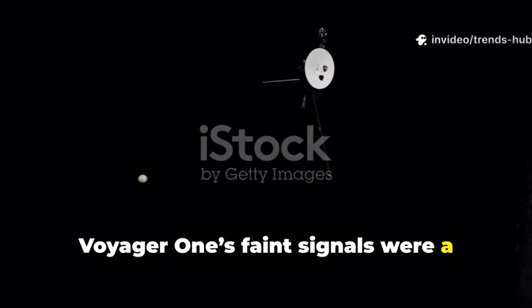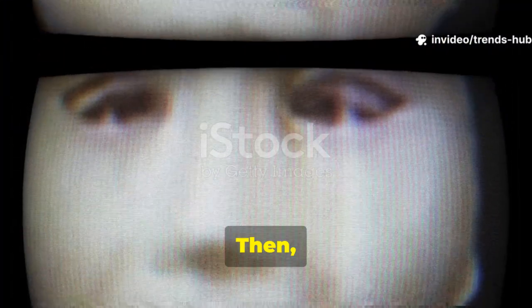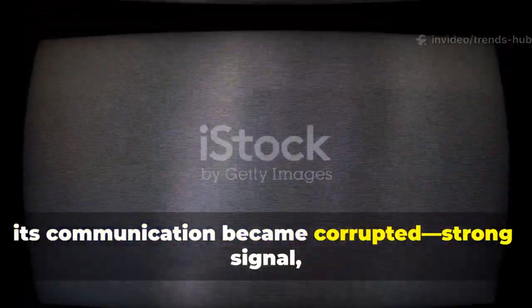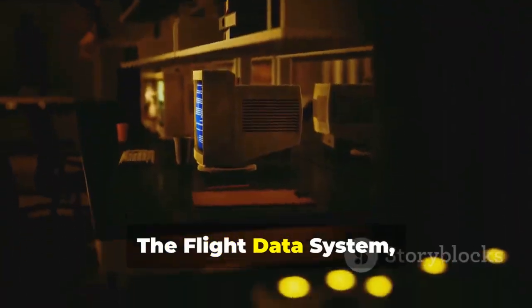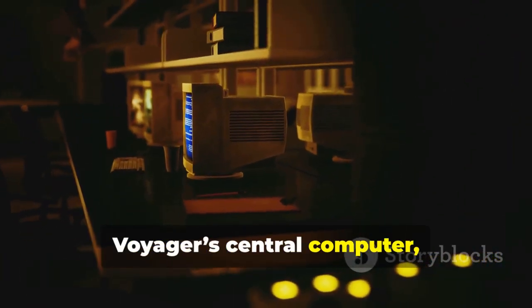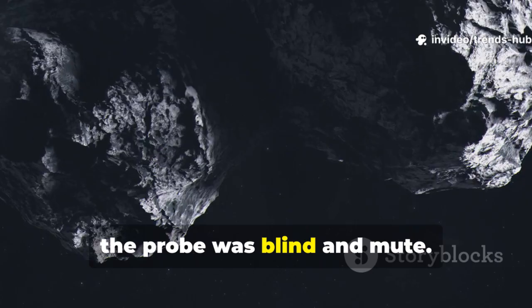For 46 years, Voyager 1's faint signals were a lifeline of data. Then, in late 2023, its communication became corrupted. Strong signal, but unreadable data. The flight data system, Voyager's central computer, was sending nonsense. Without it, the probe was blind and mute.